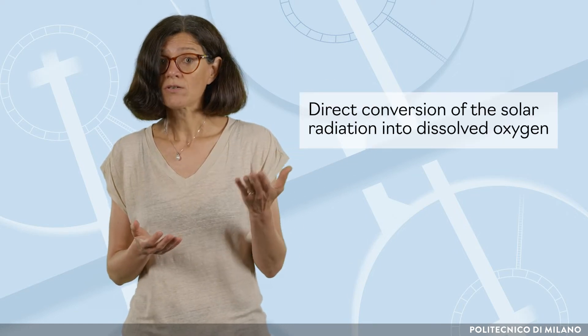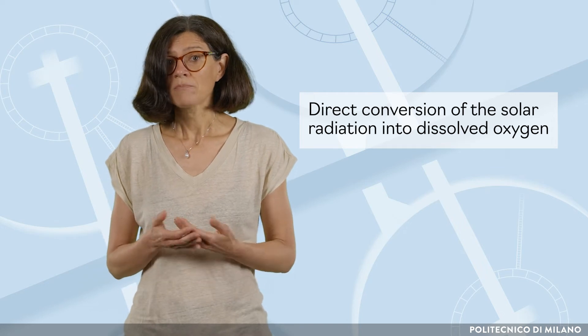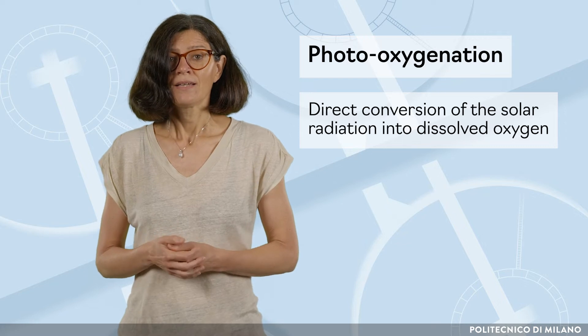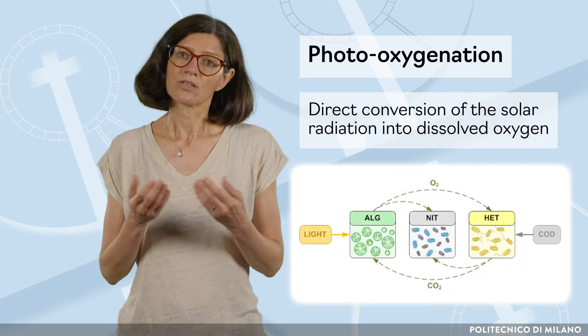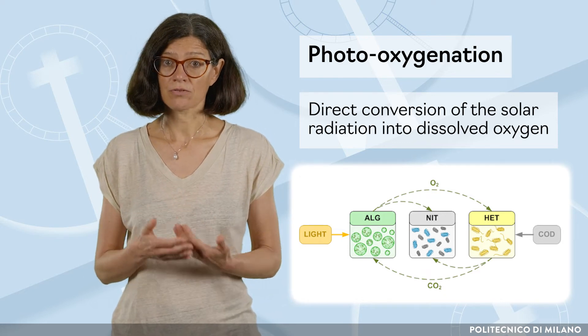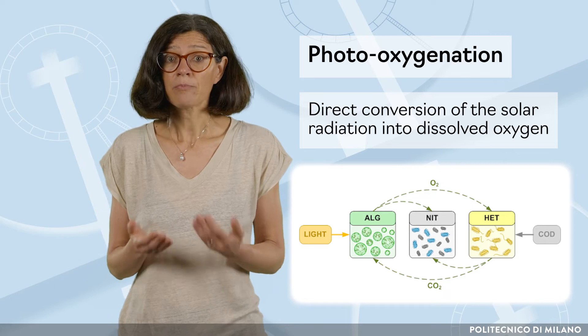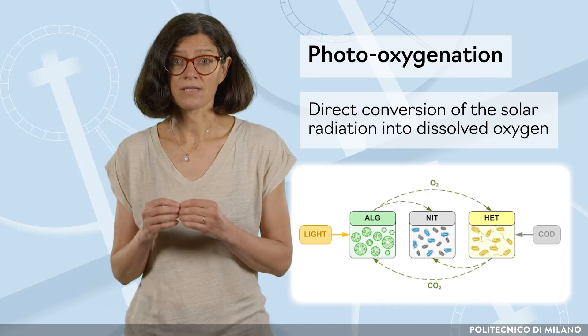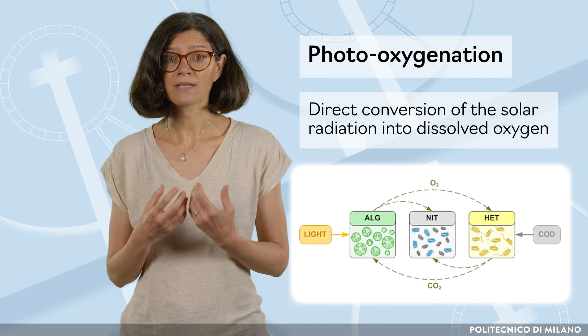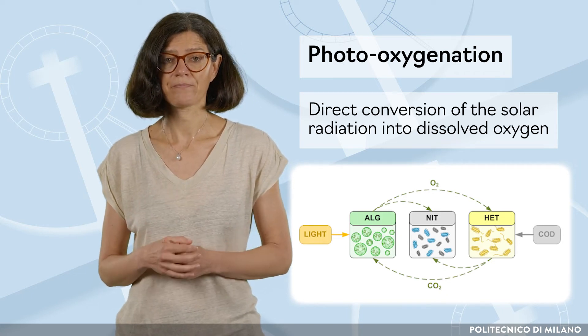Having microalgae in the biological system allows the direct conversion of solar radiation into dissolved oxygen, thus implementing the so-called photooxygenation. The oxygen released by photosynthesis sustains the oxygen demand by nitrifiers and by heterotrophic bacteria, thus leading to the development of a complex ecosystem in which many microbes coexist and interact according to complex synergistic pathways.